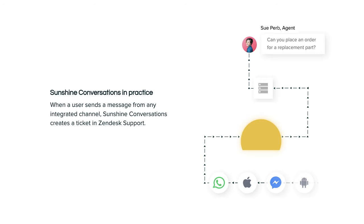In practice, here's what this looks like with an individual request. A user writes in from any integrated channel such as social channels or SDKs. That message comes from the channel to a Conversations app. Then Sunshine Conversations takes that message and communicates with the business systems on the other side, and that message turns into a ticket in Zendesk Support. This diagram also works in reverse — if an agent responds, that message goes back through the Sunshine Conversations app and directly to the user on any of the social channels they might be using.